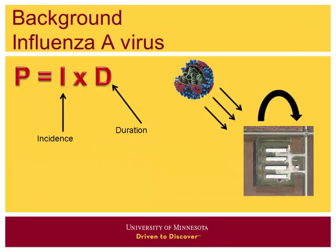One important thing to keep in mind is what we're actually looking at when we talk about prevalence. Prevalence is a combination of incidence of disease and duration of that disease. At the herd level, we could see high prevalence if we have high incidence — many new cases — or because we have a long duration of infection. Schematically, for our grow-finish or sow herds, is high prevalence due to many new viruses entering, or to viruses maintaining themselves within sites over time?